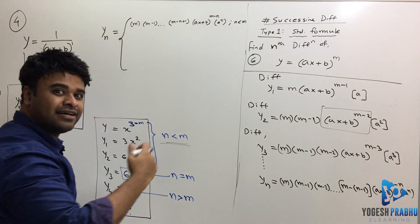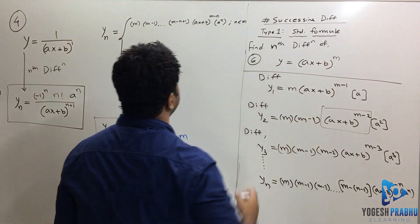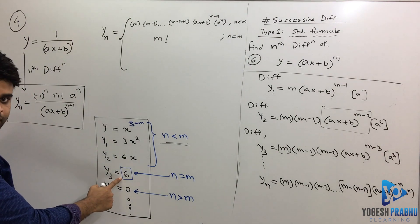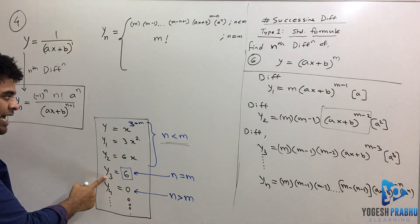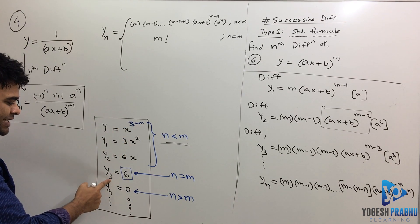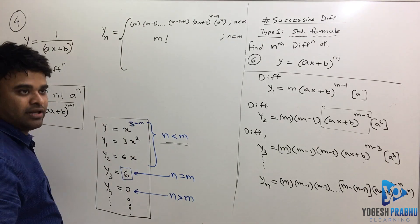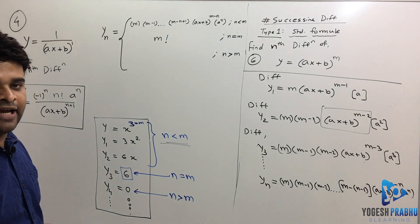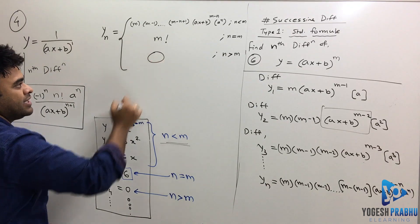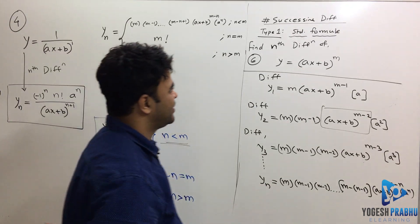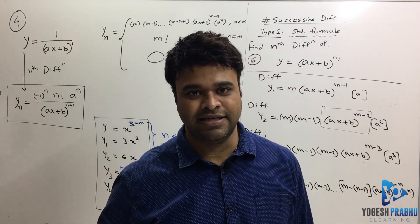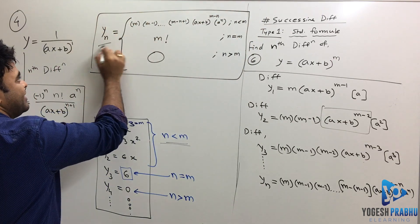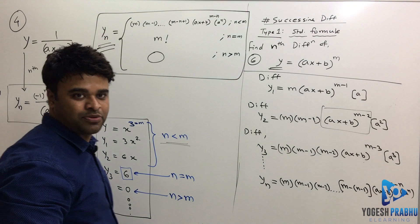To summarize the three cases for y equals (ax+b)^m: when n is less than m, yn equals m(m−1)···(m−n+1)·a^n·(ax+b)^(m−n); when n equals m, yn equals m! (a constant); and when n is greater than m, yn equals zero. This covers all cases for the nth derivative of a polynomial expression.